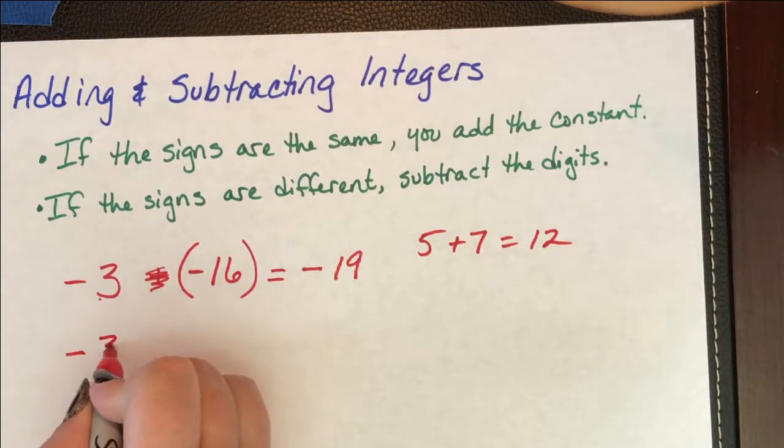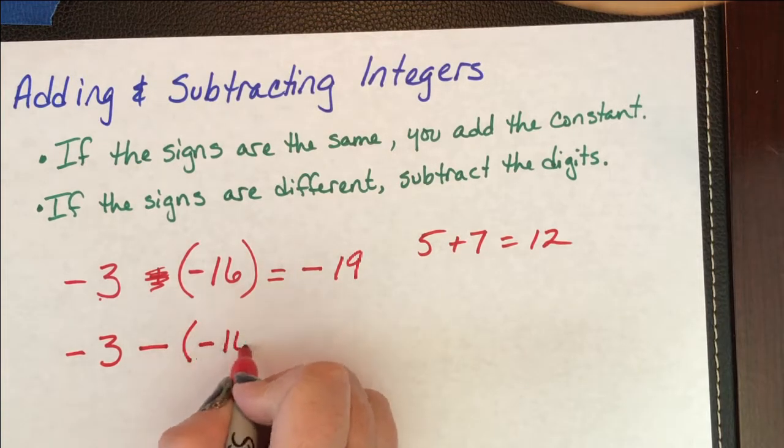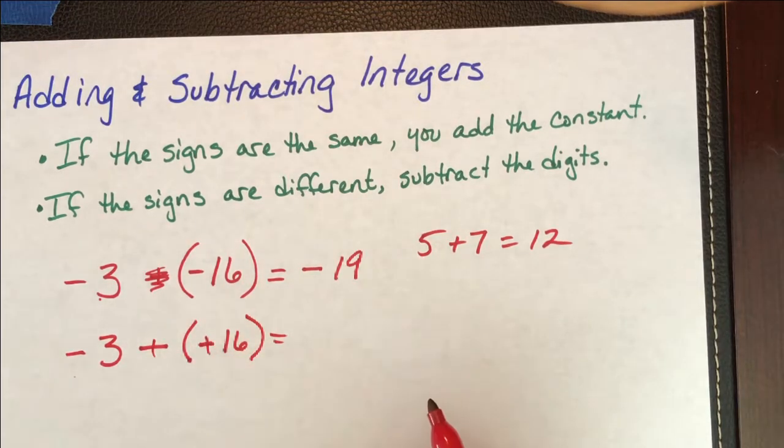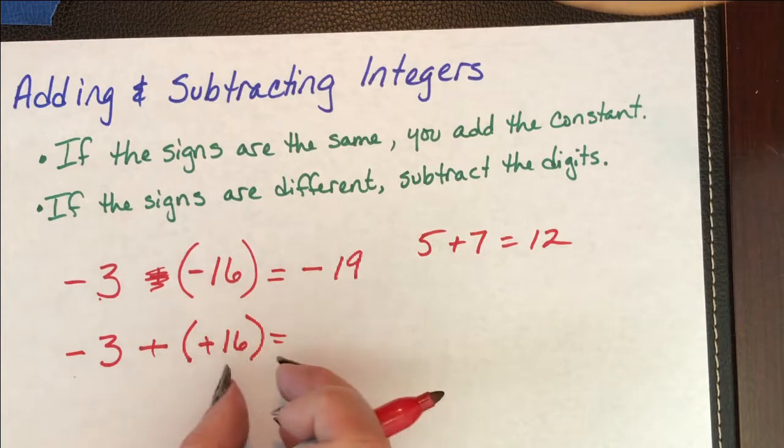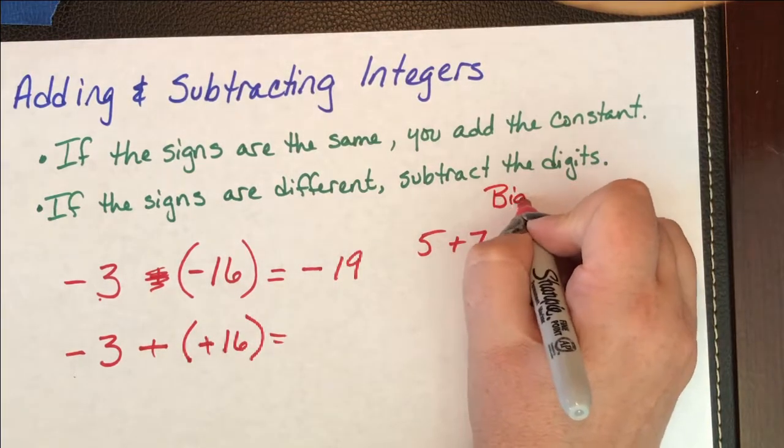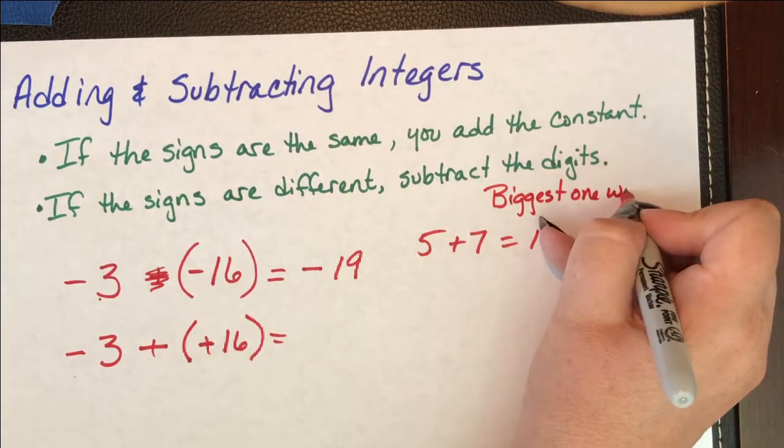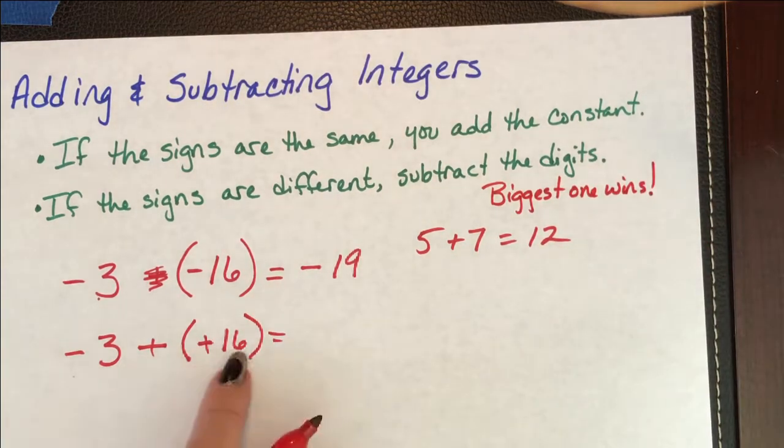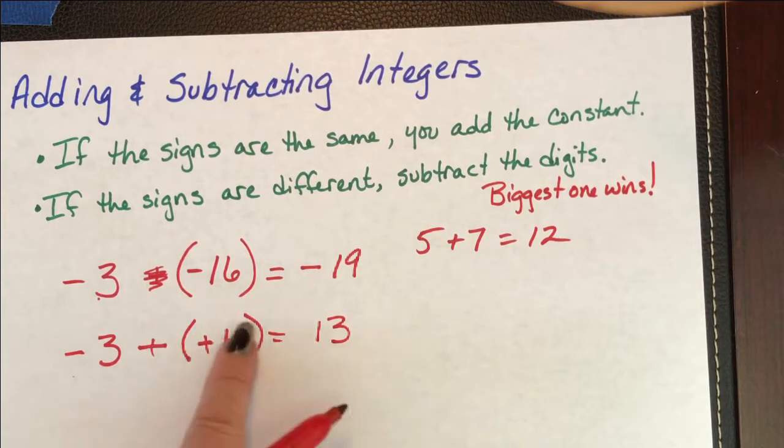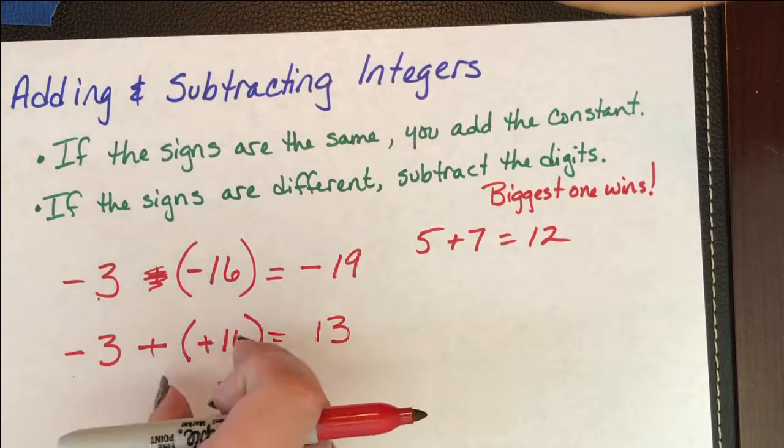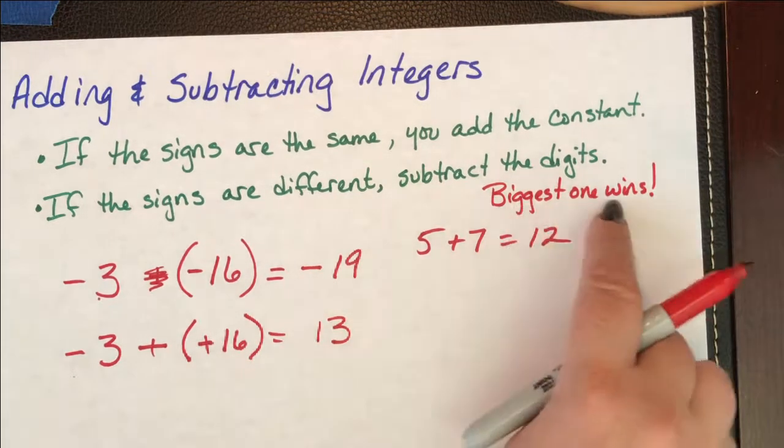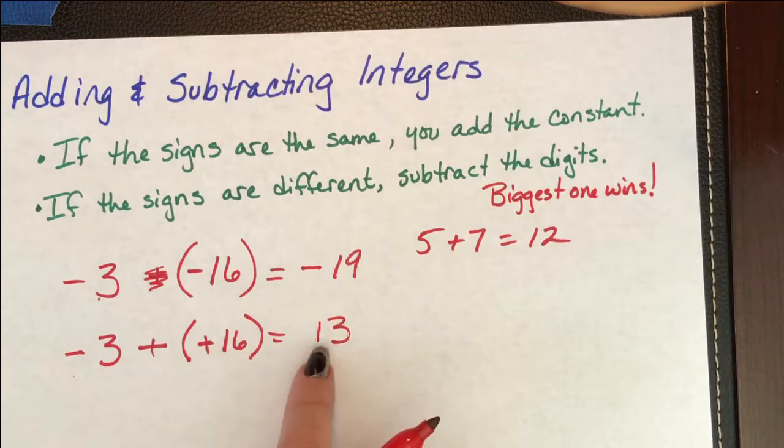If the signs are different, negative three minus negative 16 is the worst thing you can get. I like them because I can go dink, dink. Now I have a negative number that I'm combining with a positive number. The signs are different, I'm going to subtract. And the biggest one wins. Let's write that down. Biggest one wins. That means when I subtract these two, my number is 13. And is this a positive or a negative? I have a whole bunch of positive numbers and just a few negative numbers. That's going to take away a few of these positive numbers. I'm going to have a bunch of positive numbers left over. That's what the biggest one wins means. So my answer is going to be positive 13.